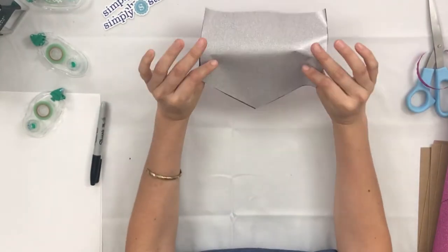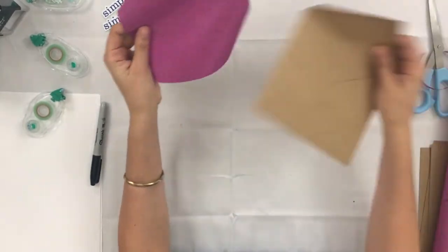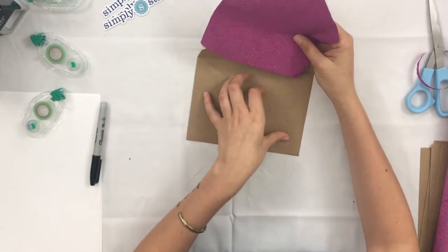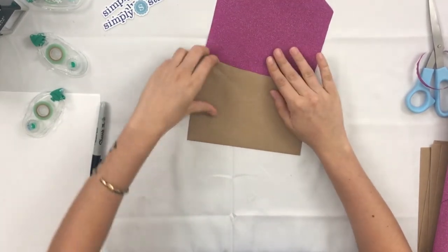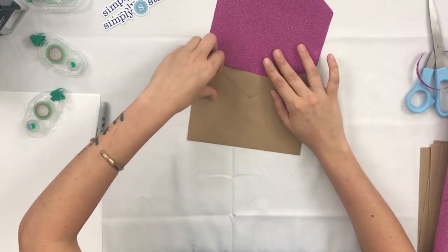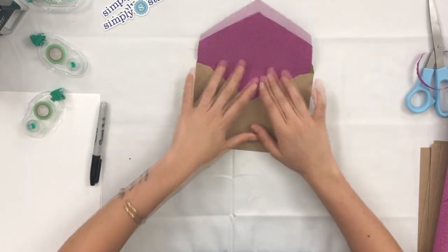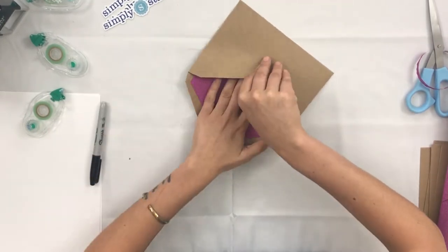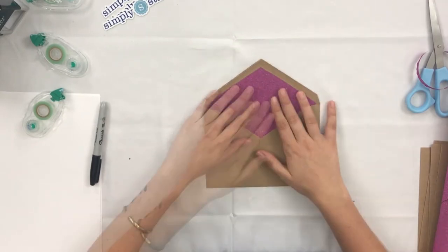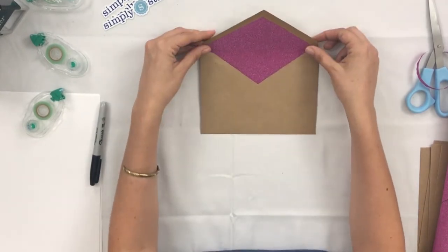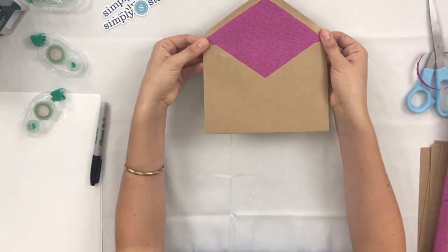And once your liner is all cut out, you're just going to take one of your plain envelopes and you're going to place it inside the envelope by just sliding it inside of the folds here. And you will see that it is a perfect fit.